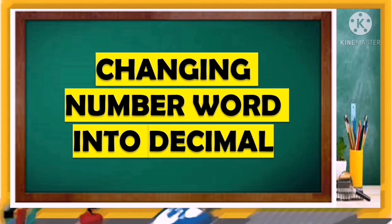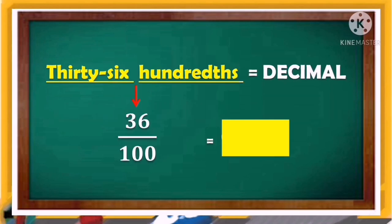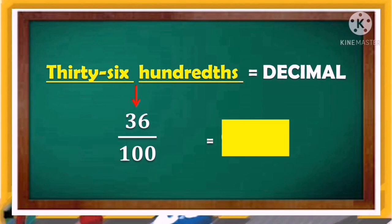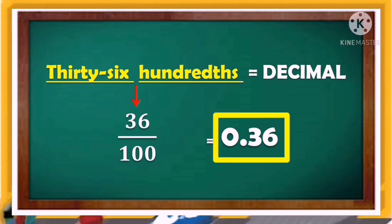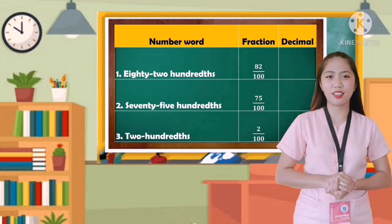Now let's change a number word into its decimal form: 36 hundredths. To get its decimal form, divide 36 by 100, which equals 0.36. You can read this as 36 over 100 in fraction form, or 36 hundredths. Did you get it? Now let's try to answer this.